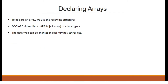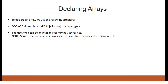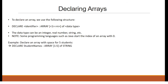Declaring arrays. To declare an array, we use the following structure: DECLARE identifier ARRAY[1:n] OF DataType. The data type can be integer, real number, string, etc. Note that some programming languages, such as Java, start the index of an array with 0. For example, to declare an array with space for 5 students: DECLARE StudentNames ARRAY[1:5] OF String.